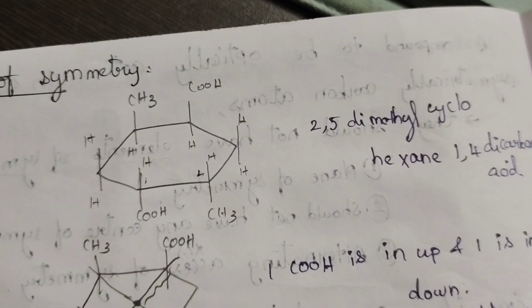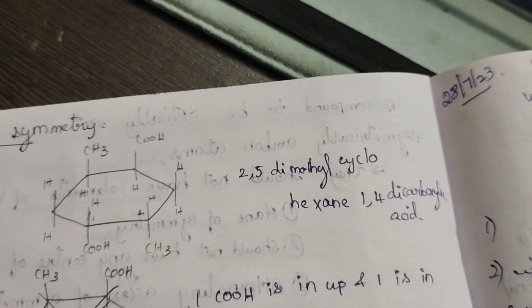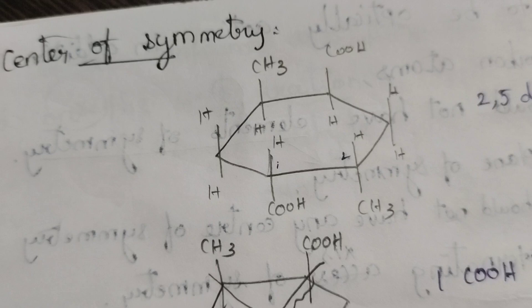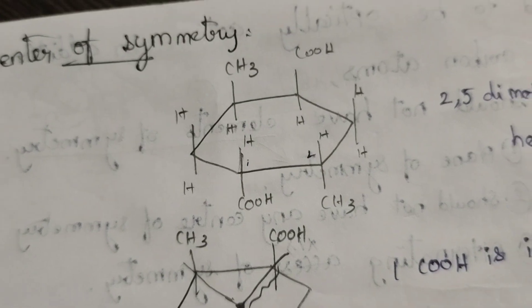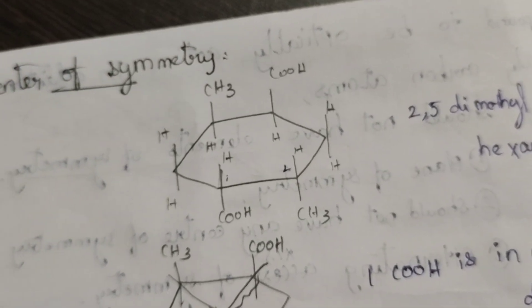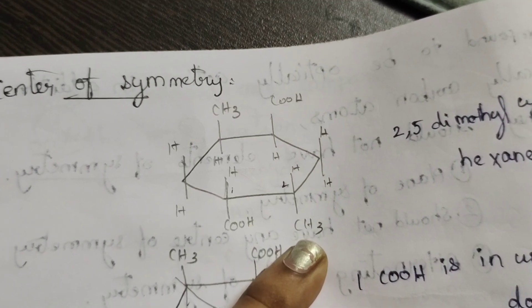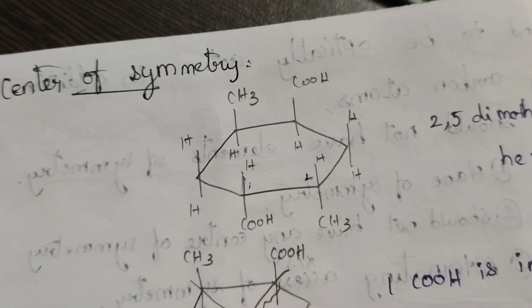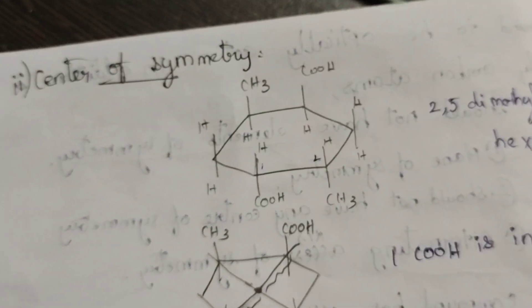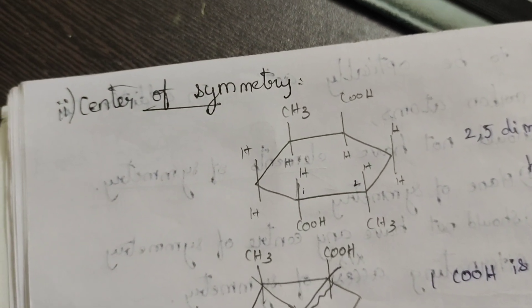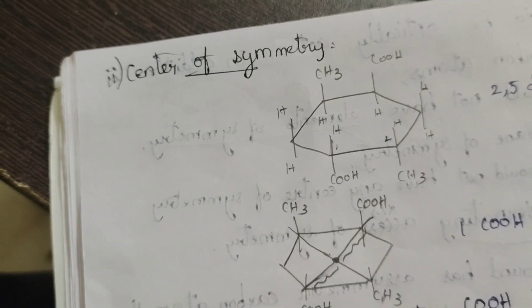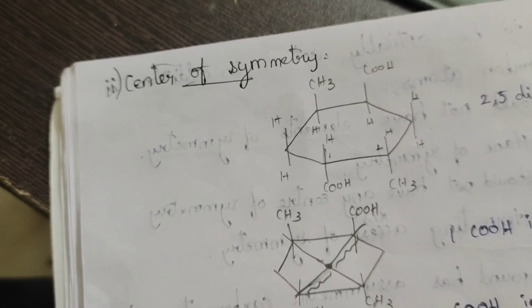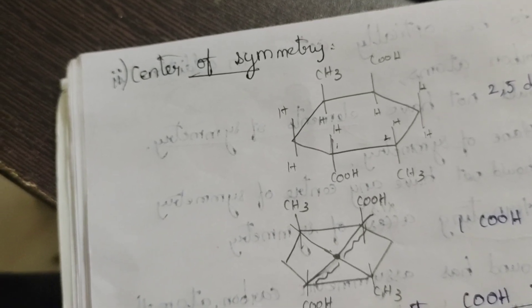Center of symmetry: for example, take the compound 2,5-dimethylcyclohexane-1,4-dicarboxylic acid. If we pass through the center of symmetry, there is an identical molecule at equal distance on both sides. All straight lines drawn through the center of the molecule meet identical atoms at equal distance from the center. That is the center of symmetry.